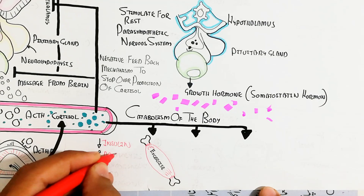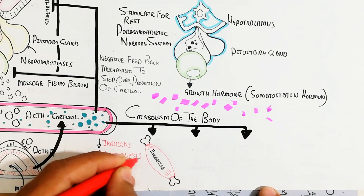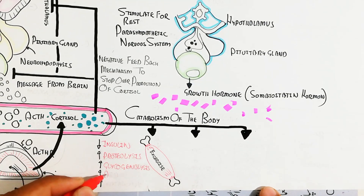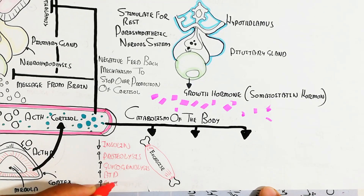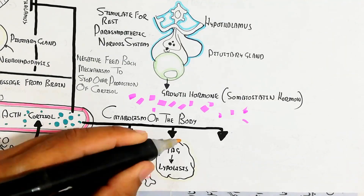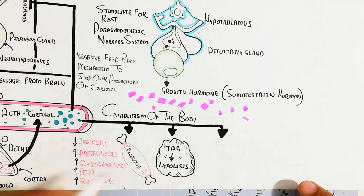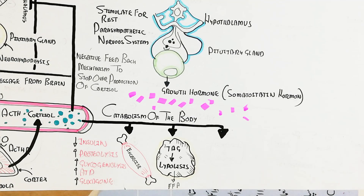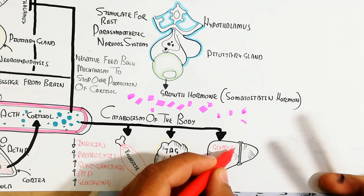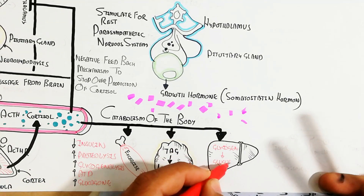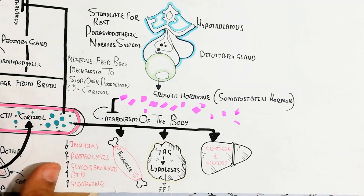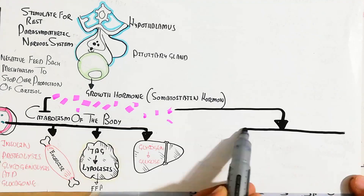From a metabolic perspective: when insulin drops, proteolysis increases, and glycogenolysis increases, raising ATP and glucagon due to cortisol. Cortisol targets muscle tissue, and during exercise, triacylglycerol is converted into free fatty acids — a process known as lipolysis. Glycogenolysis produces more glucose in the blood, leading to hyperglycemia.